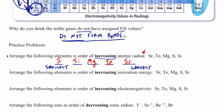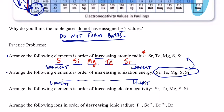Next, arrange these elements in order of increasing ionization energy — lowest to highest. The same five elements apply. Which one is easiest to take an electron from? It depends on radius. The largest radius has the lowest ionization energy. So the order would be strontium, then tellurium, then magnesium, then silicon, and finally sulfur would have the highest ionization energy because it's the smallest of the group.